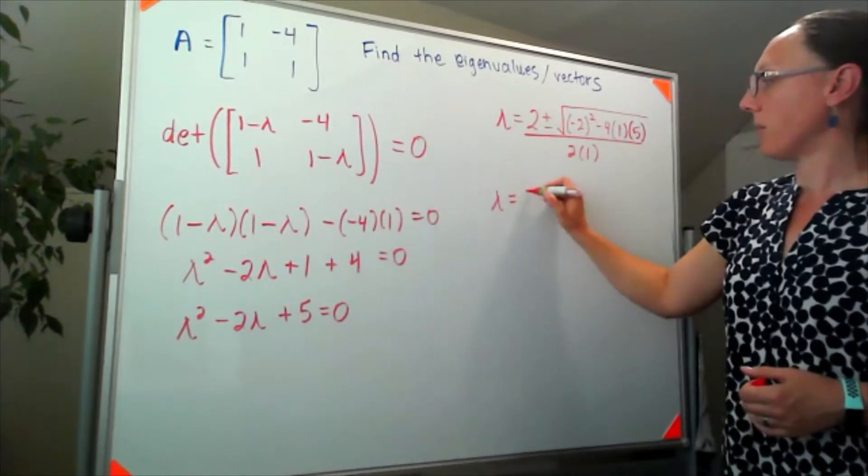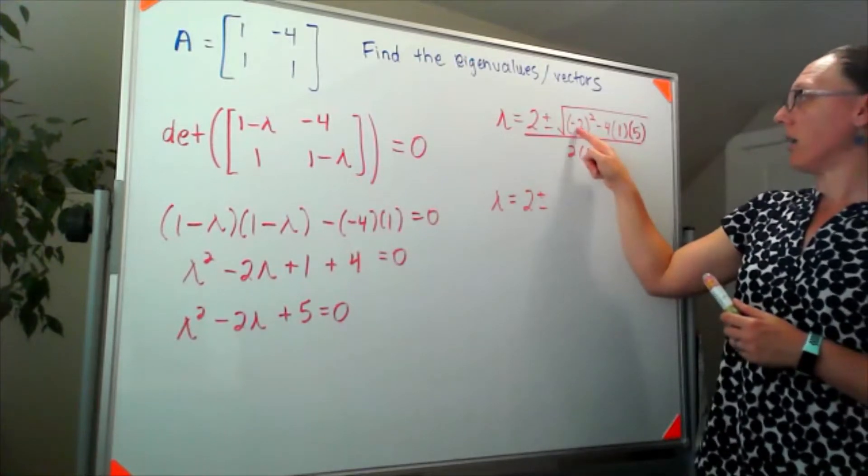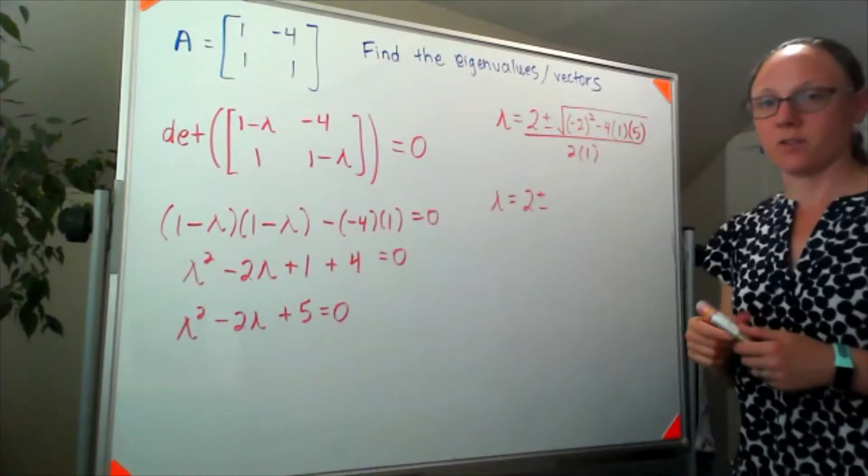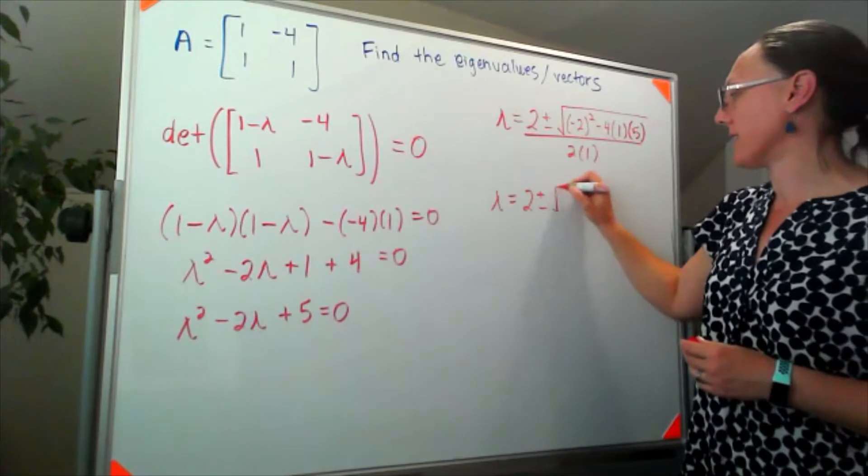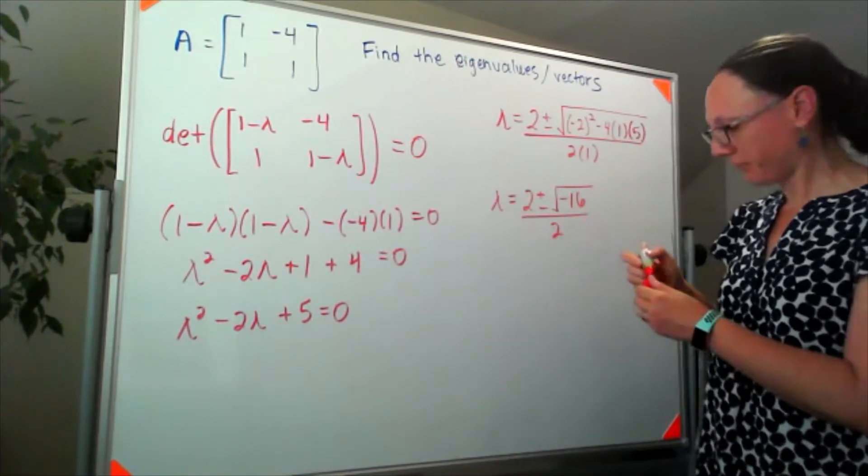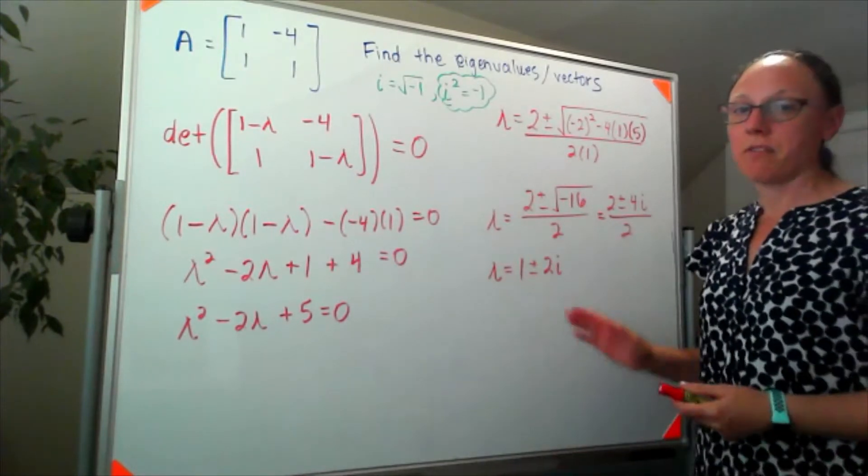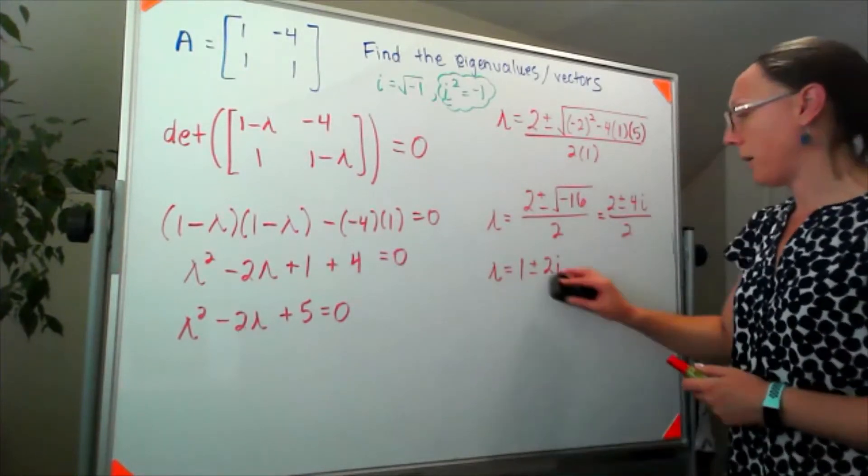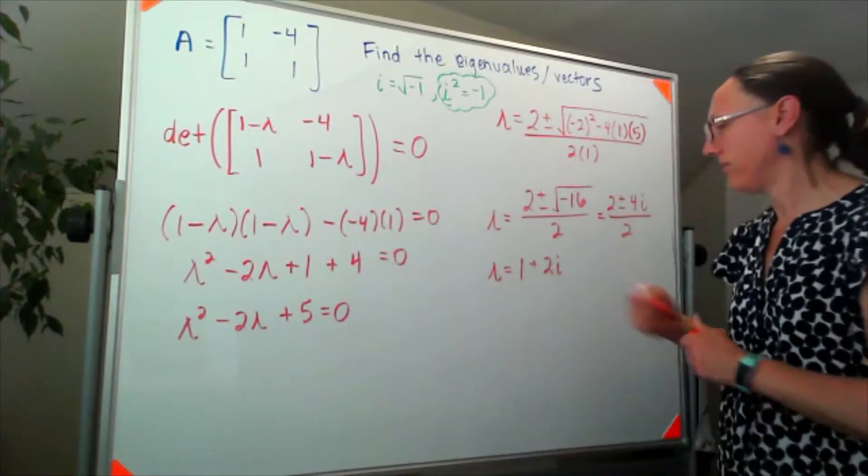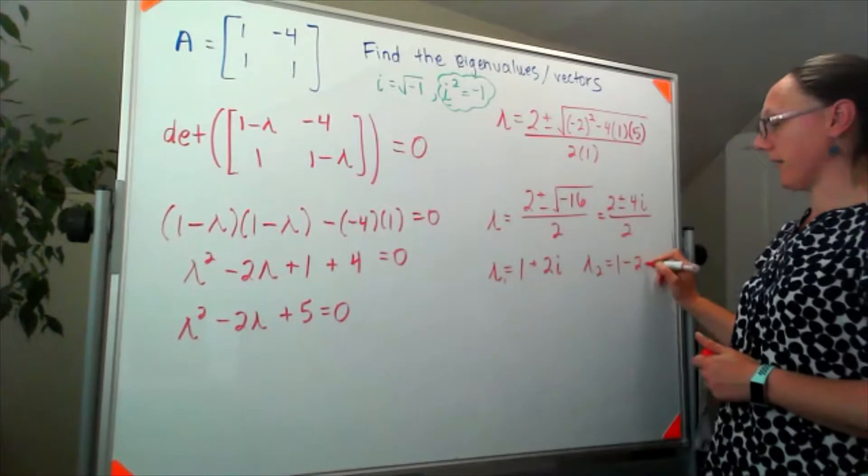So I clean that up a little bit inside the square root. I've now got 4 minus 20, so it's a negative 16 inside my square root. That is two eigenvalues because we've got a lambda equals 1 plus 2i and another lambda 1 minus 2i.